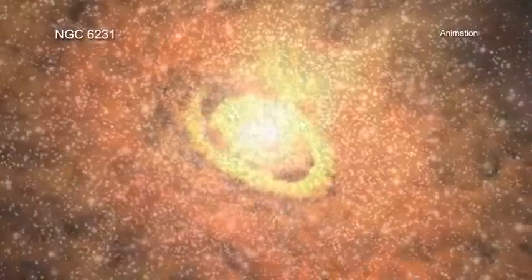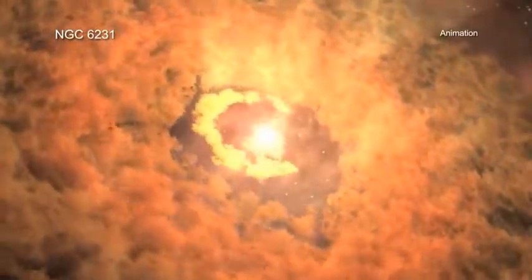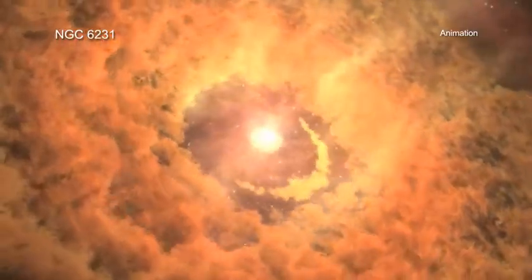Astronomers think that our Sun was born in a star cluster about 4.6 billion years ago that quickly dispersed.